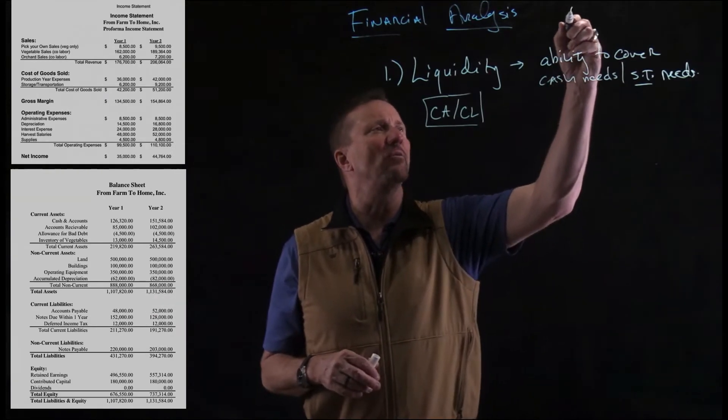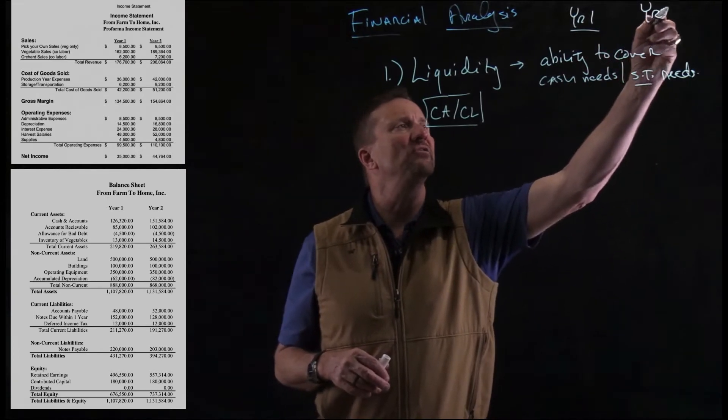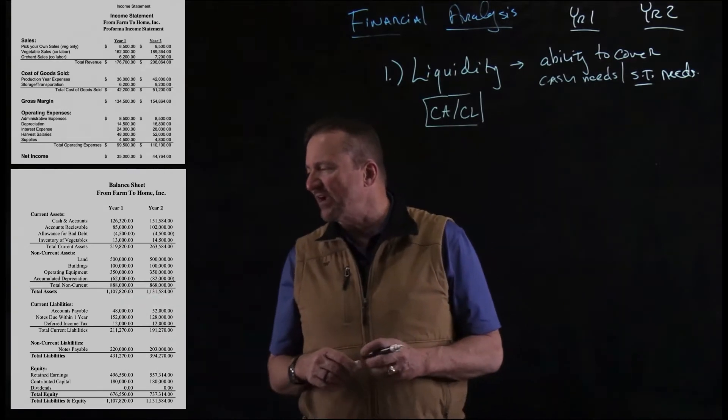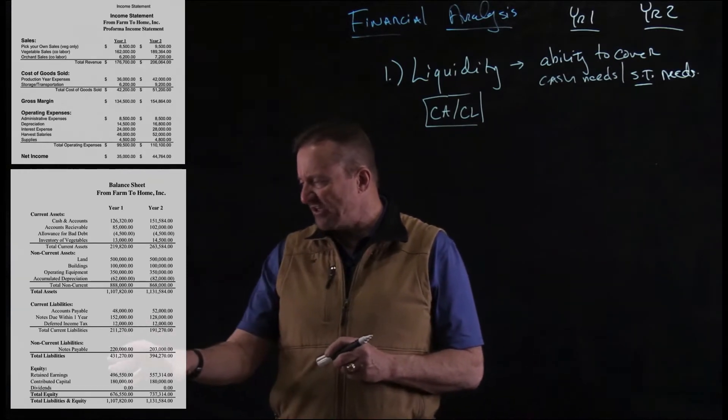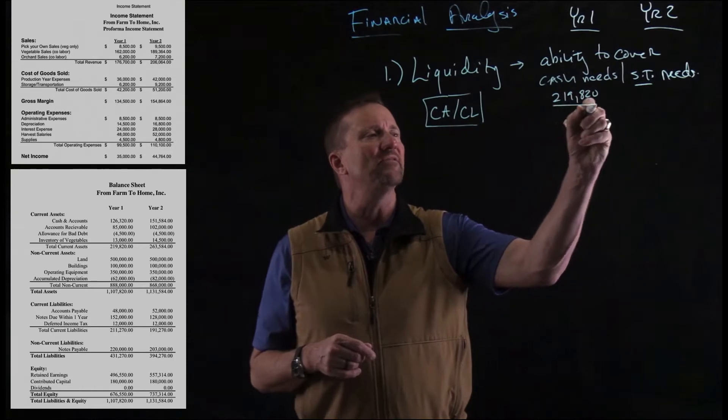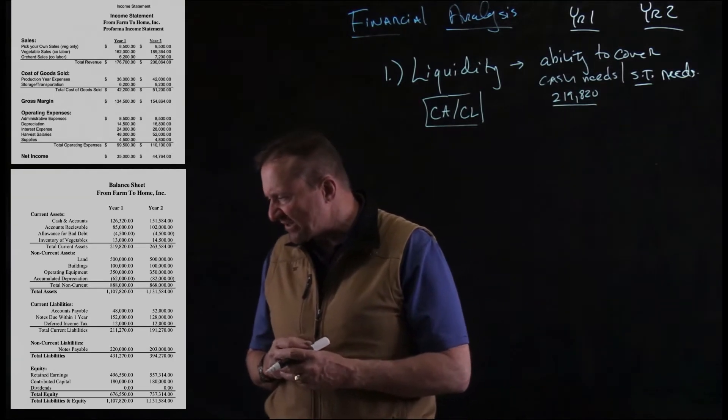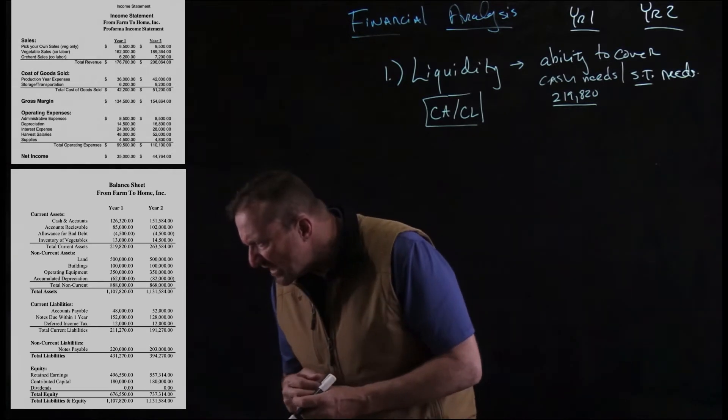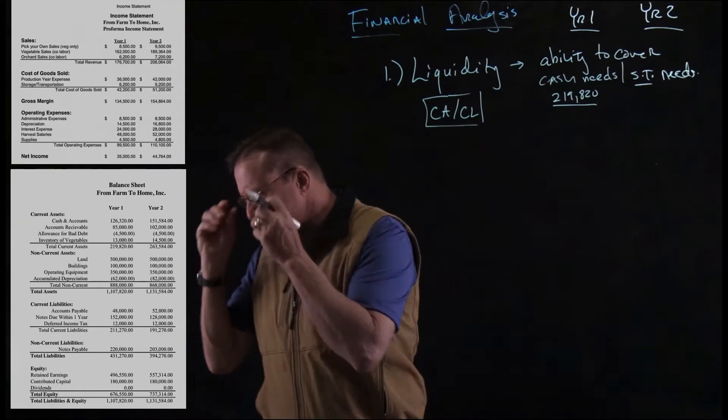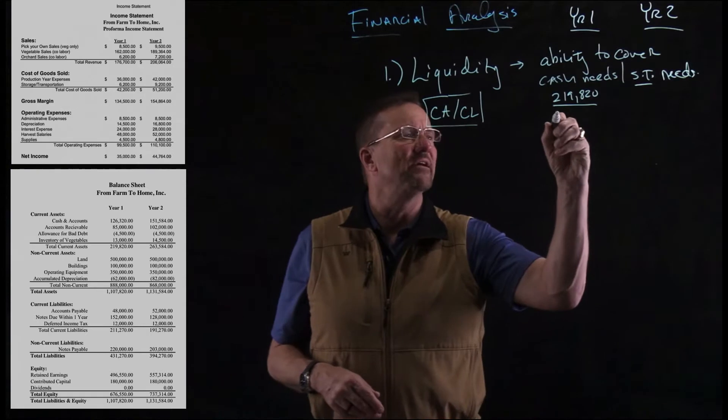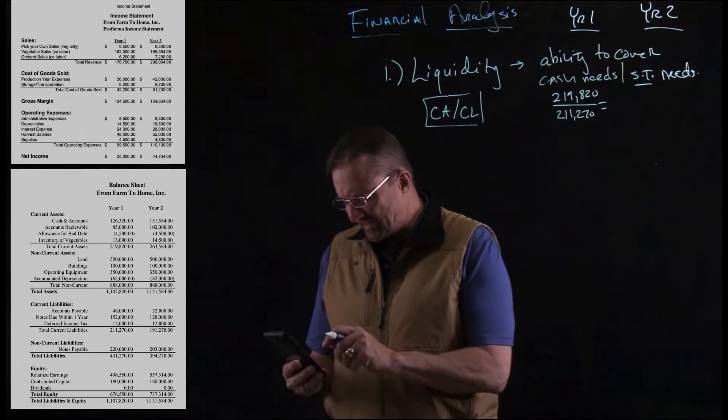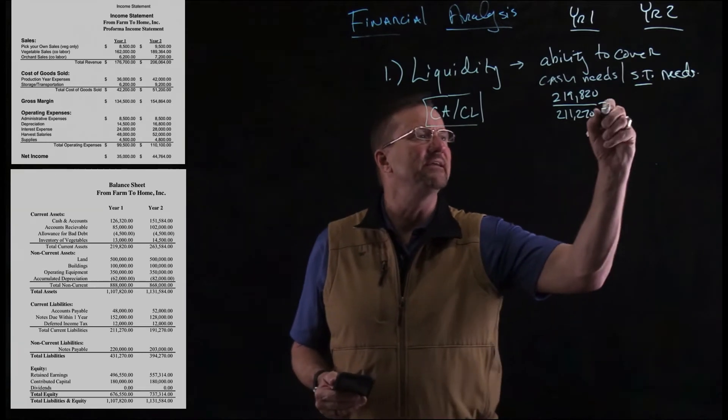So in our example here, we've got year one. I'm going to put this here at the top of my board here, and you do the same. And we're going to kind of run down these examples. So in the first example here, I've got the numbers pulled over right here, but we have got our current assets, if you look at the balance sheet here, at 219,820. So in year one, we just take 219,820, and we divide that by our current liabilities, which is 211,290. So take 211,270 and divide those two out. Let me punch that in on my calculator here. And as we punch all this stuff out, we're going to find out that that answer is a 1.04.